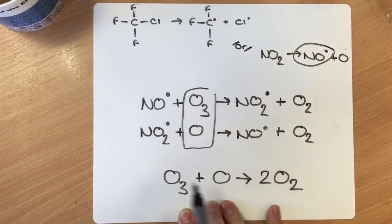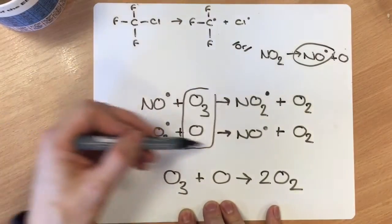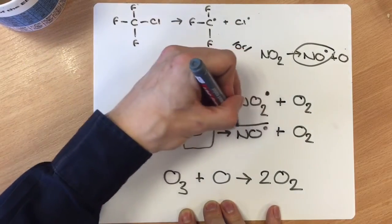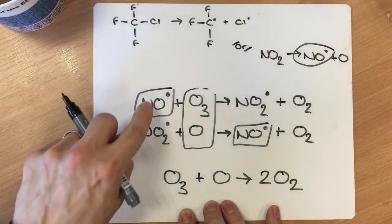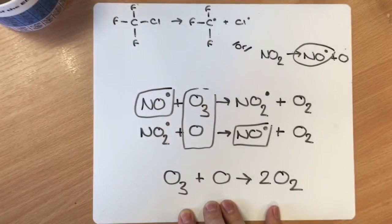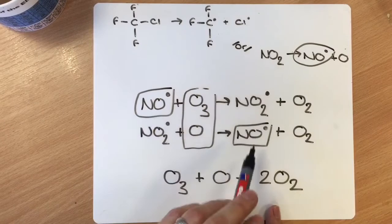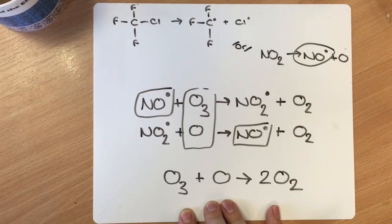If you just looked at the overall equation, you wouldn't have a clue that any of this is going on. And the main reason for that is the NO radical just here, going in and coming back out, is catalyzing this decomposition. And that's because it goes in and comes back out chemically unchanged in two reactions.